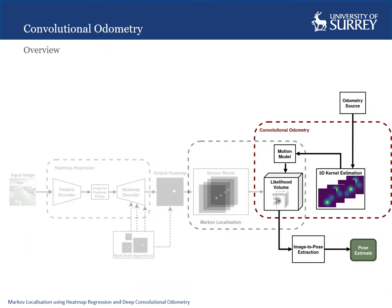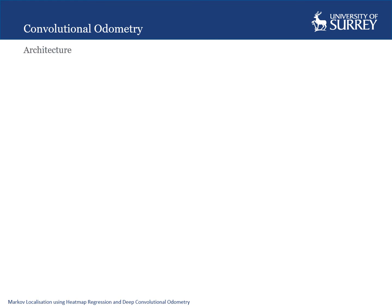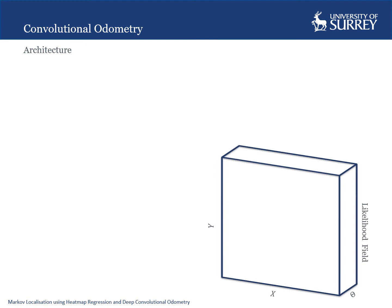In our second contribution, we introduce a novel convolutional odometry layer that leverages GPU deep learning hardware to efficiently propagate uncertainties using odometry information. The output of the heatmap regressor can be stacked into a likelihood volume, where each channel represents a theta value.